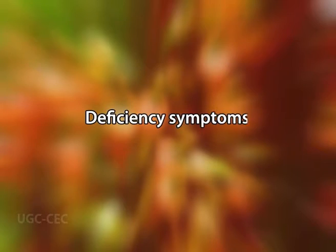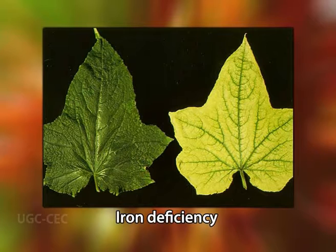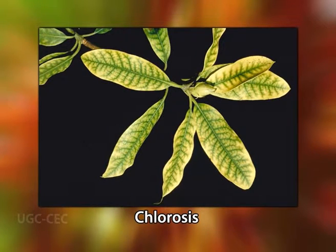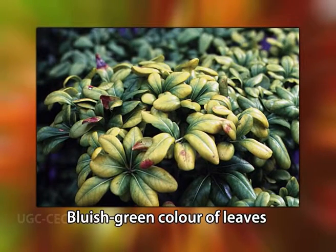Iron deficiency invariably leads to a simultaneous loss of chlorophyll and degeneration of chloroplast structure. Chlorosis appears first in the interveinal regions of the youngest leaves because the mobility of iron in the plant is very low and it cannot be withdrawn from the older leaves. Chlorosis may progress to the veins, and if the deficiency is severe enough, the leaves may turn white.